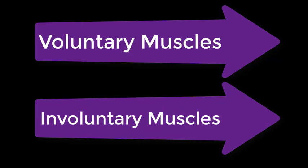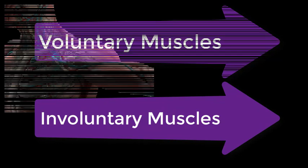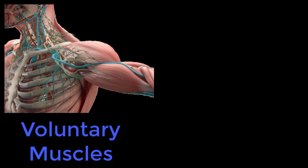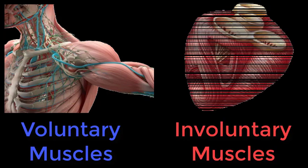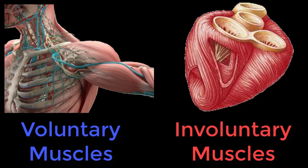Voluntary muscles are those whose movements can be consciously controlled by us — skeletal muscles fall under this category. Involuntary muscles, however, are those that can move on their own according to their functions. Smooth and cardiac muscles fall under this category.